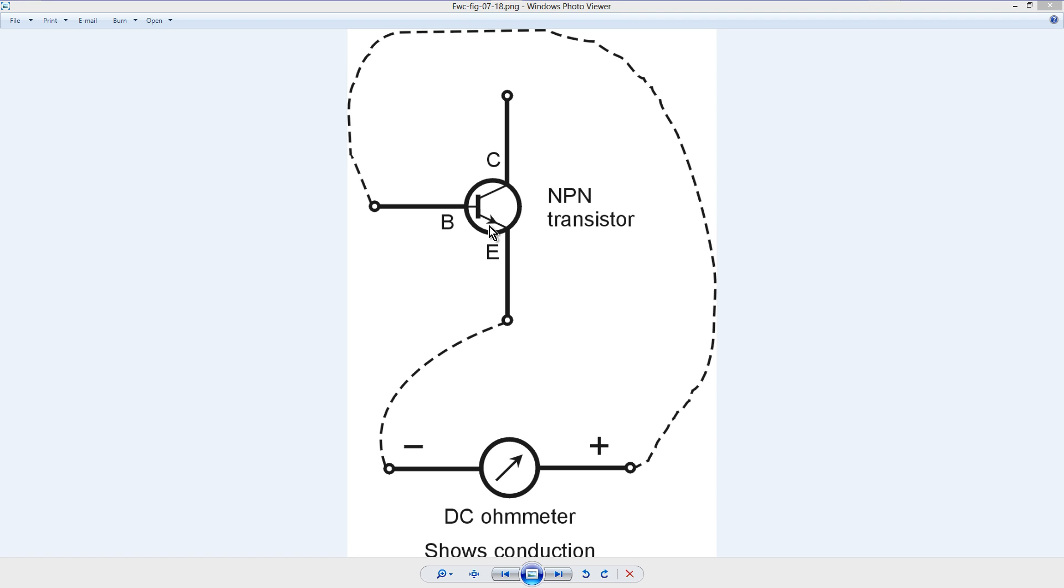Remember, an NPN transistor in this case has N-type semiconductor material here at the emitter, P-type at the base, and again N-type at the collector.